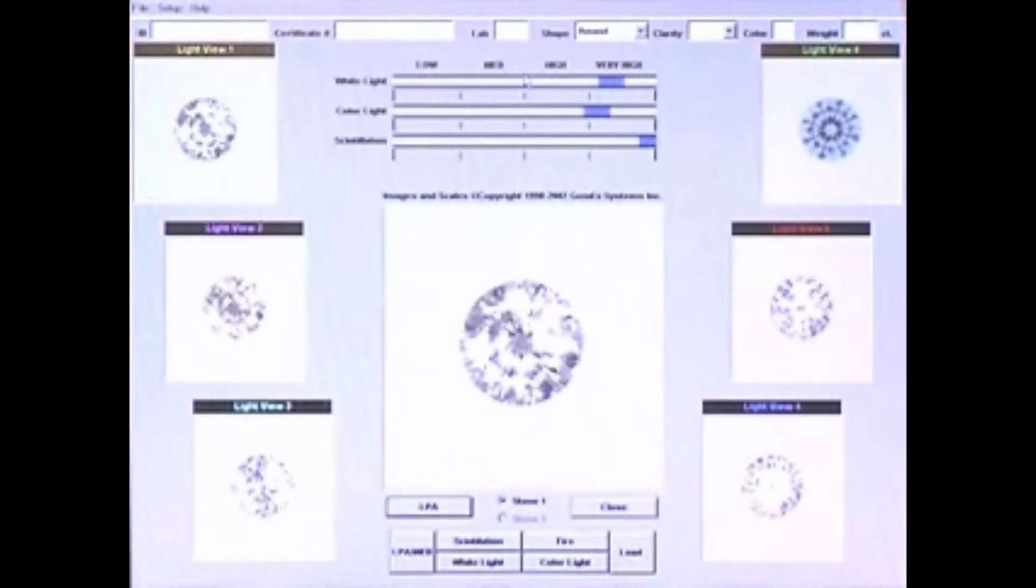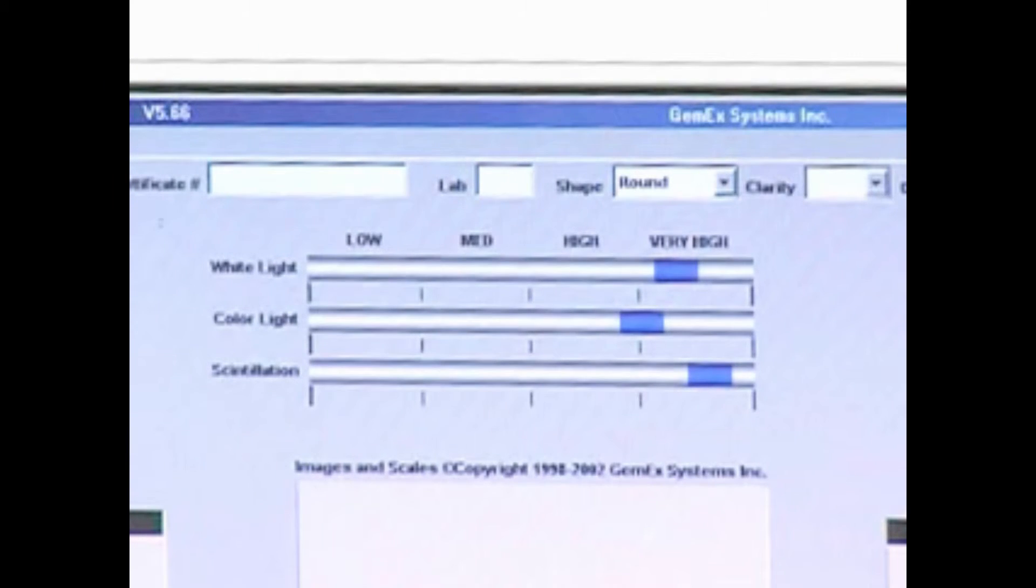We measured thousands of diamonds, over 150,000 to date, to determine the range of light performance possible. We then created simple scales that tell you where this diamond sits relative to all others in the world. The highest bright white light return we found is with the blue bar to the right, the lowest to the left. The same with color light and the same with scintillation.